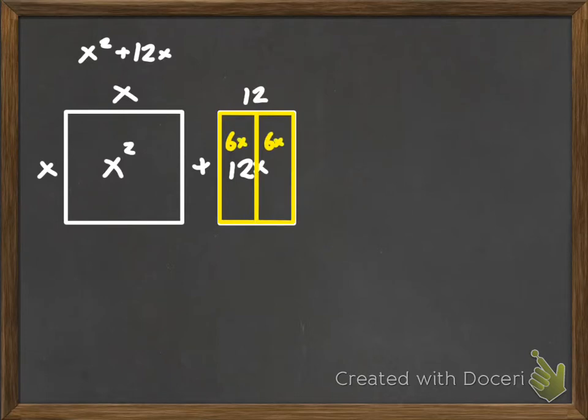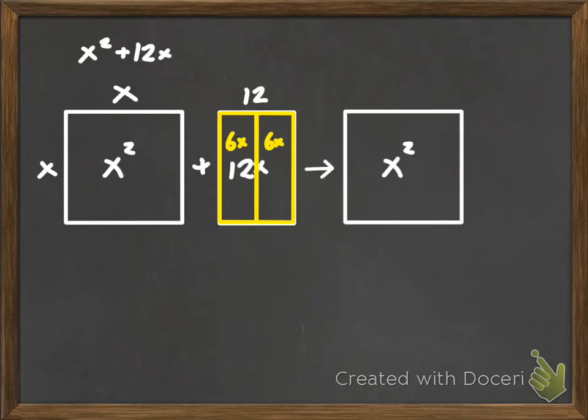All right? Now what I'm going to do is I'm going to rewrite this. So I'm dividing that 12 by 2. So each of these rectangles are now 6x, right? So I'm going to rewrite this whole thing here as this square, and I'm just moving the 6x's, right, to either side of the square. Now I'm just missing this little chunk here, this little square, right?